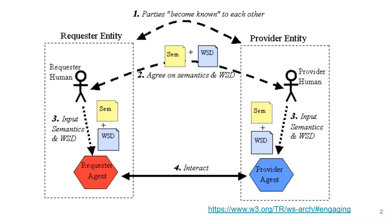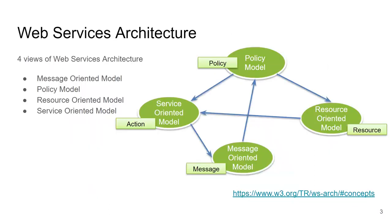The web services architecture is split into four main views for simplicity — it is one architecture explained from four points of view. There is a message-oriented model focused on messages, a policies model on rules and behavior, a resource-oriented model dealing with resources and their representations, and finally a service-oriented model focusing on the services themselves.